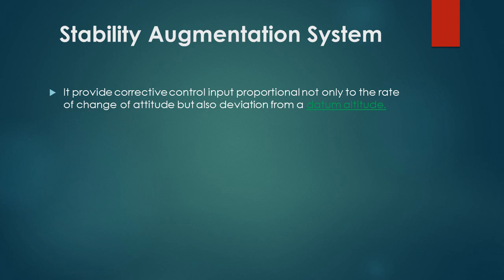The function for the stability augmentation system, or we can call it SAS, is to provide corrective control input proportional not only to the rate of change of altitude but also deviation from a datum altitude.